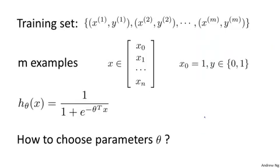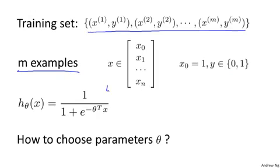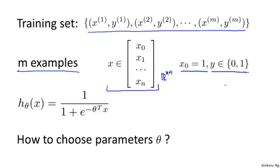Here's the supervised learning problem of fitting a logistic regression model. We have a training set of m training examples, and as usual, each of our examples is represented via a feature vector that's n plus 1 dimensional, with x0 equals 1. And because this is a classification problem, our training set has the property that every label y is either 0 or 1. This is a hypothesis, and the parameters of the hypothesis is this theta. Given this training set, how do we choose or fit the parameters theta?